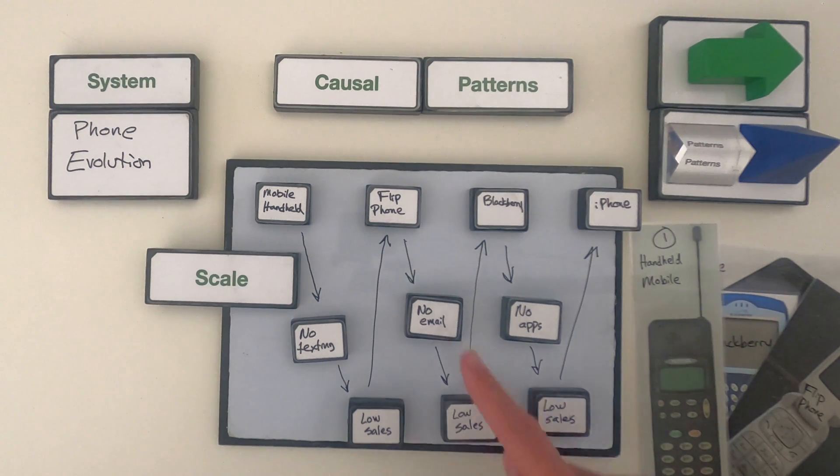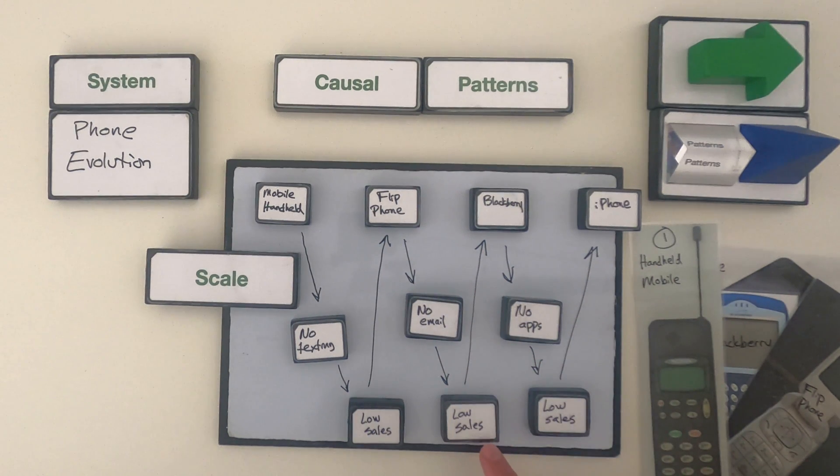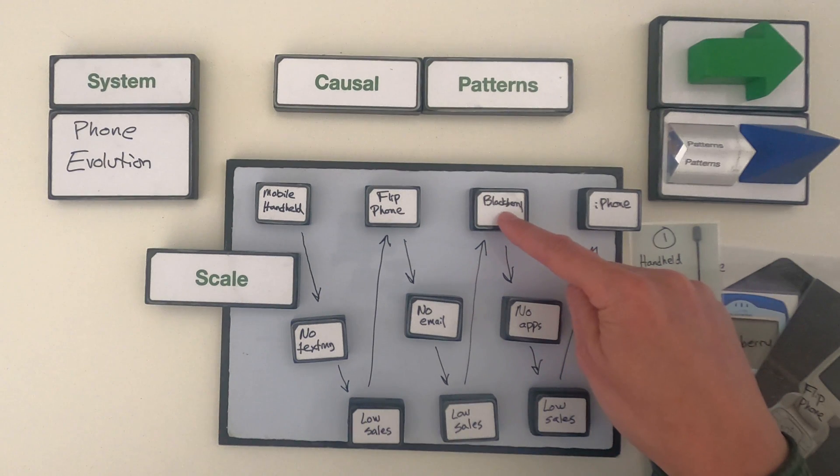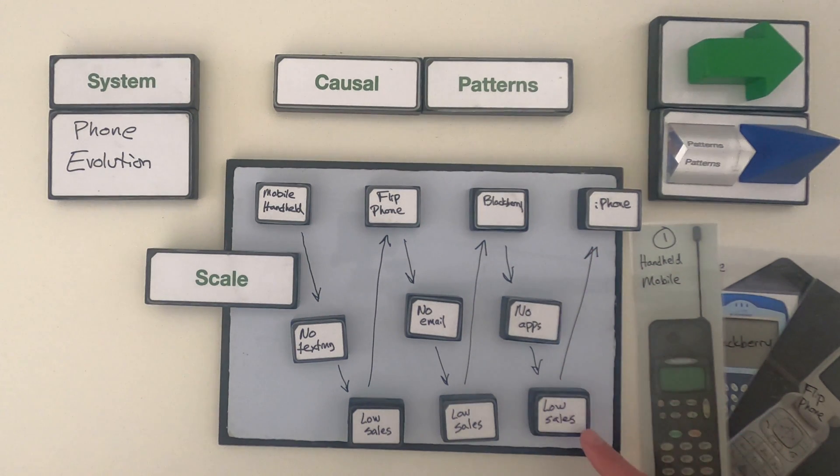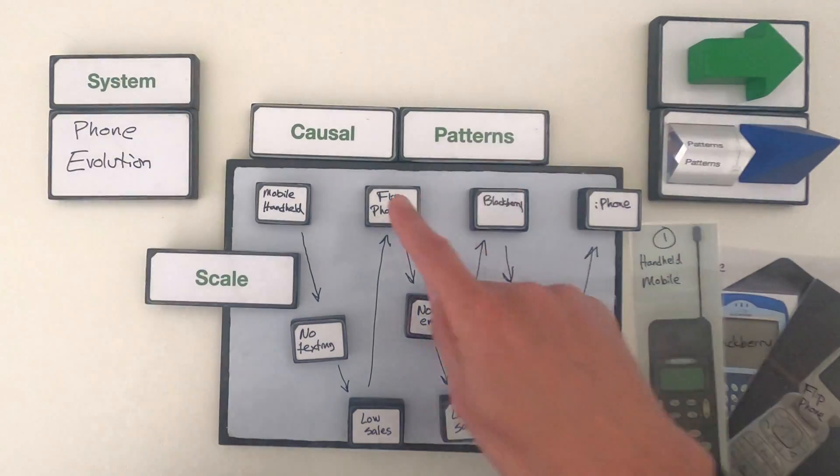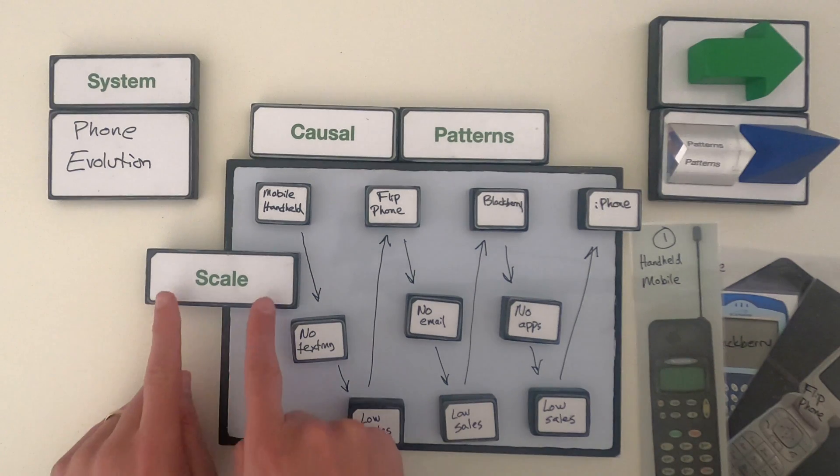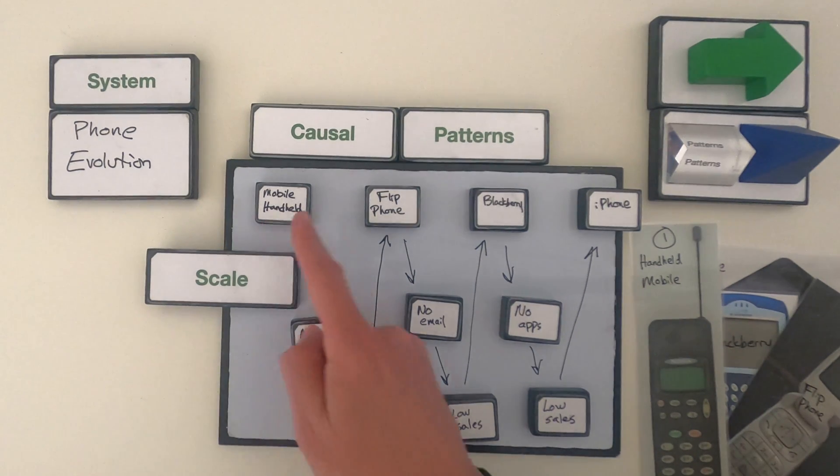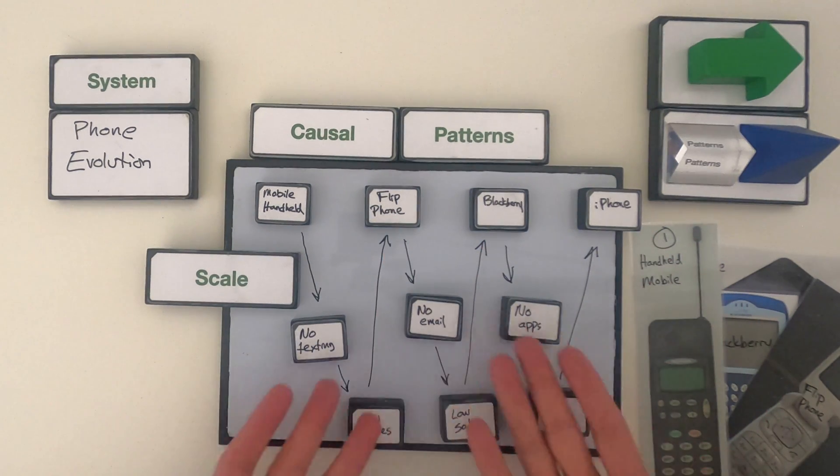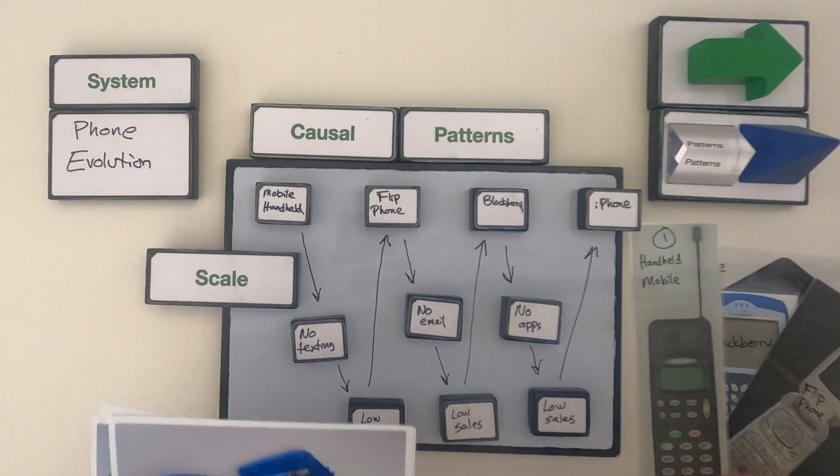So what I think happened is just like the problem with no texting, the problem with the flip phone is you can't do email. So that responded to lower sales of the flip phone and eventually higher sales in the Blackberry, which didn't have apps. There were low sales of that and then we get the iPhone showing up. And so these would be causal patterns that I'm looking at at varying time scales. So as we just look from one phone to another, we can't see what's going on behind the scenes.